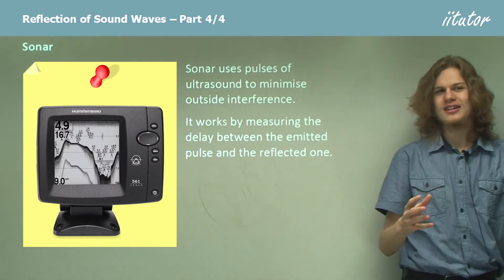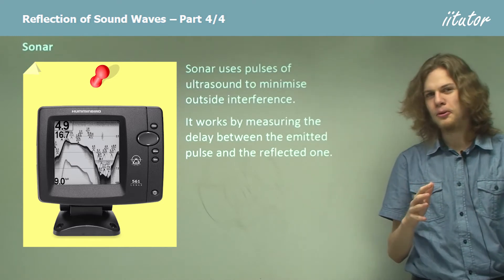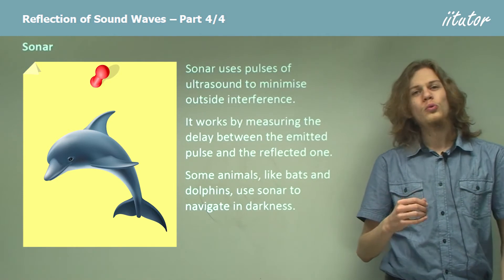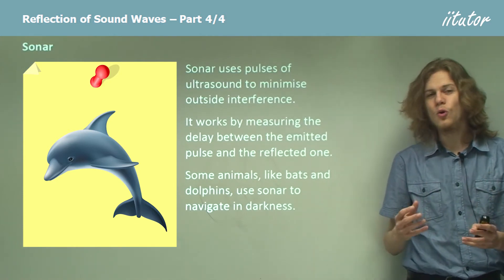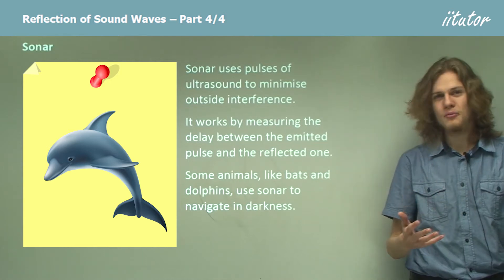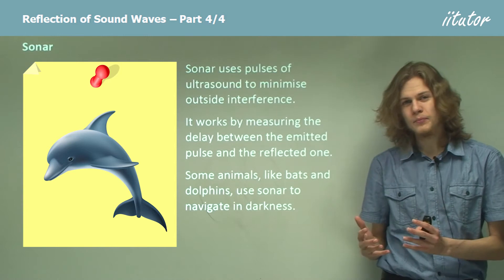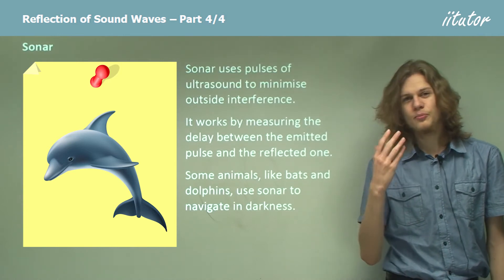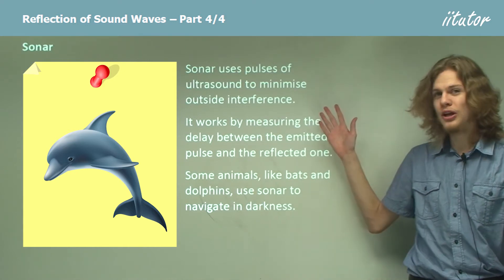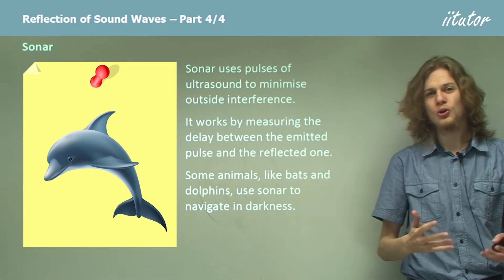We'll look at a question to figure out exactly how to calculate depth a little later on. Some animals like dolphins and bats use sonar or echolocation as a means of sensing their environment. Bats spend most of their waking hours in the dark, so they can't rely on their eyes. Instead they send out ultrasound pulses and listen to the reflections, allowing them to find their way even in total darkness.